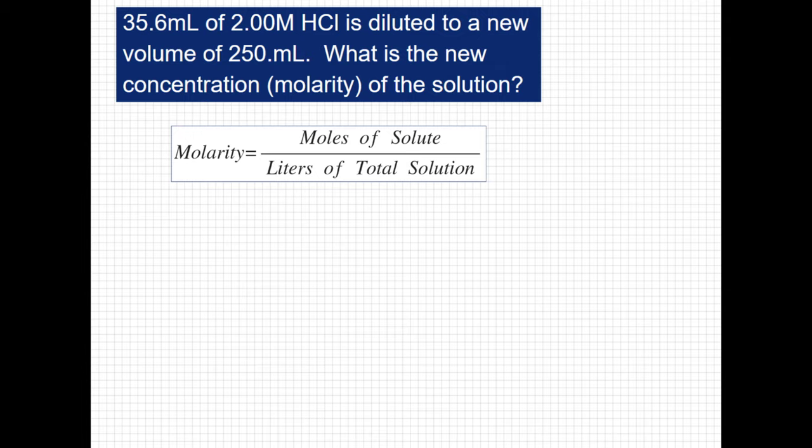When dealing with molarity though, we have to remember that we should be in liters. So when I am giving 35.6 mL, I am going to want to write that as 0.0356 liters. And then when I am giving 250 mL, I am going to want to write that as 0.25 liters.